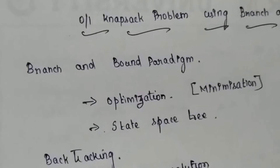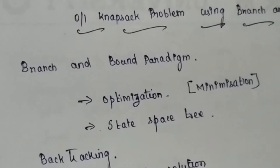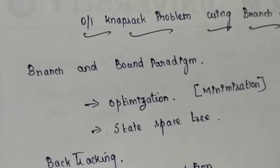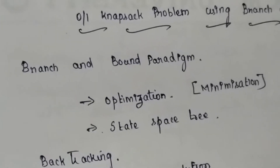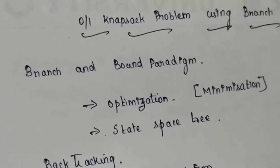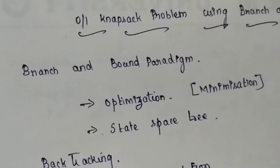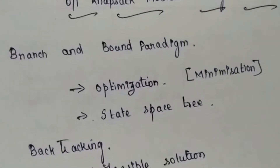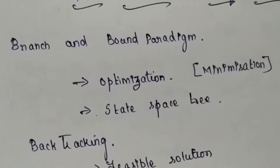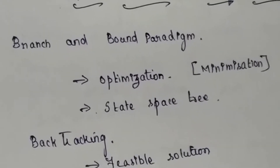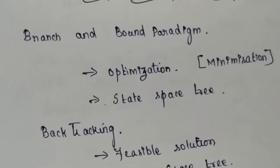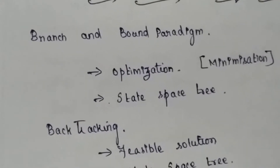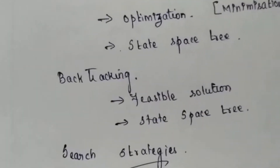Branch and bound tries to find a minimized value. For example, in the traveling salesman problem we are trying to find the shortest path. The same methodology used in backtracking is used here — we construct a state space tree — but in backtracking we find feasible solutions, whereas in branch and bound we find the optimal solution from among the feasible solutions.